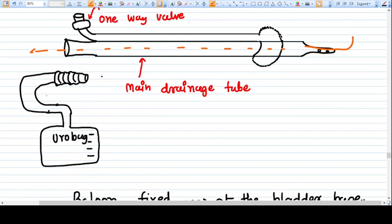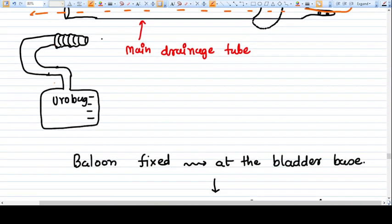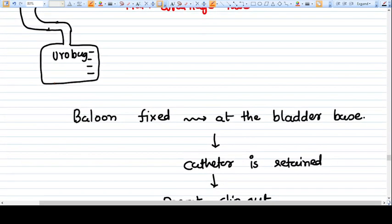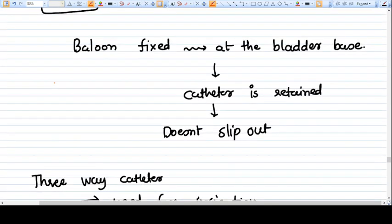The drainage lumen can be connected to the urinary bag or urobag. This is how you drain the urine. The balloon is fixed at the bladder base because when you enter into the bladder, then only after you need to inflate the balloon. When you take it out, because of the weight or gravity, the balloon is fixed to the base, so the catheter becomes retained and doesn't slip out.